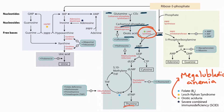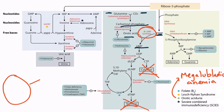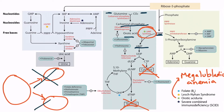If de novo pyrimidine synthesis is impaired, then thymine and cytosine are unable to be produced, meaning red blood cells will have a difficult time synthesizing and replicating DNA. Normally, the progenitor red blood cell divides many times throughout hematopoiesis and gets smaller each time. However, if DNA cannot be synthesized properly, the red blood cell divides less in an attempt to conserve DNA, resulting in large red blood cells — also known as megaloblastic anemia.